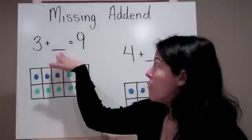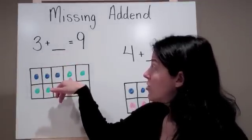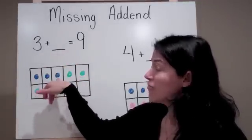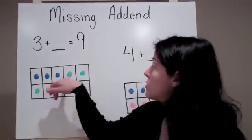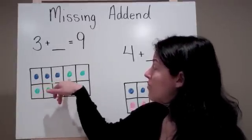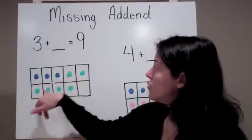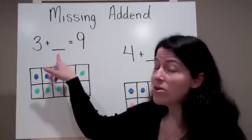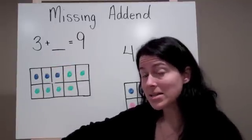Now to figure out what is the missing number, I count what I colored in after what I already know. So here are my 3 known and then I count 1, 2, 3, 4, 5, 6. So I know that the missing addend is 6.